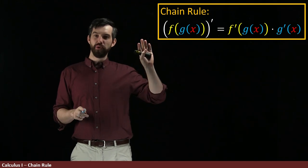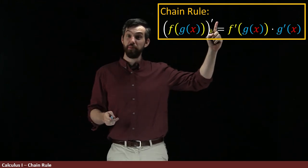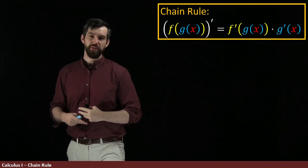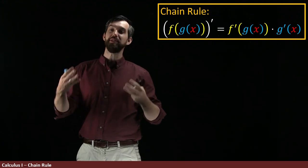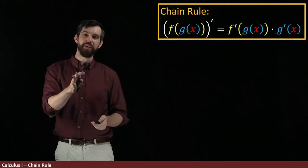Previously, we've seen the chain rule written with Lagrange notation with a bunch of different primes, but there's another way to write it using Leibniz notation, and it has several advantages.